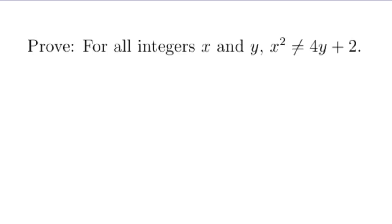Today I'd like to show you how to prove for all integers x and y, x squared is not equal to 4y plus 2. This is a nice example of a proof by contradiction.